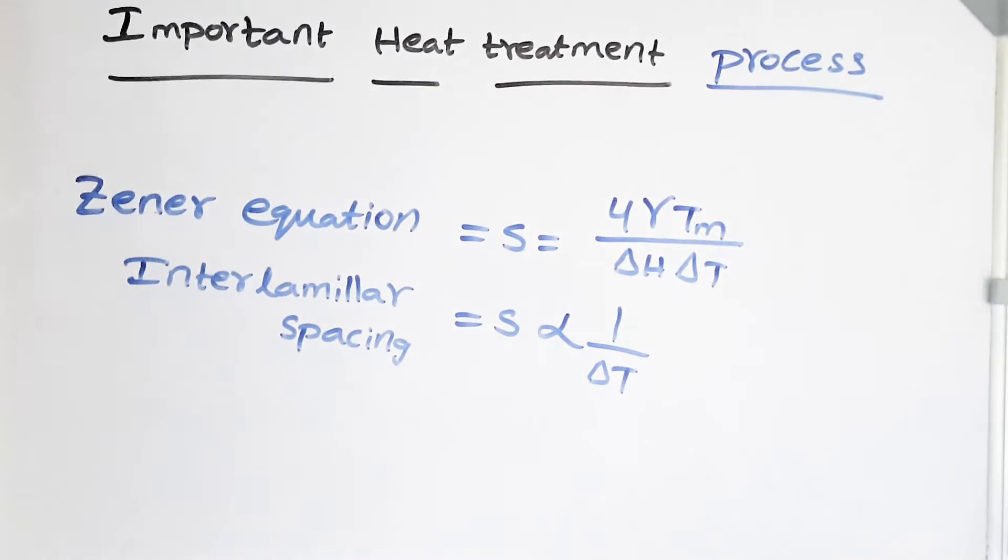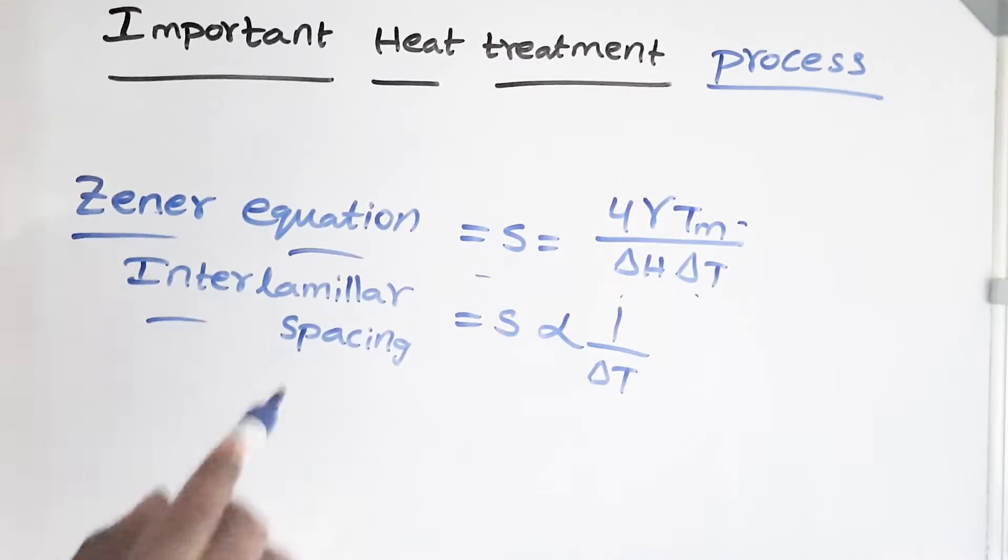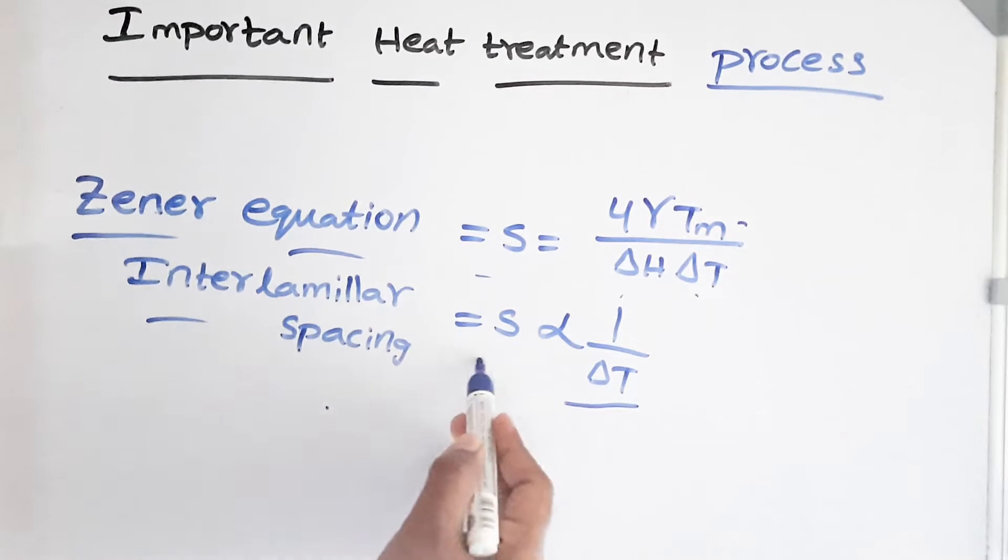Friends, before looking at the process, just look at the general equation which gives us the interlamellar spacing between the ferrite and pearlitic in the pearlitic matrix. So this gives us interlamellar spacing equals 4 gamma Tm, which is melting point, divided by delta H and delta T. So the interlamellar spacing is inversely proportional to delta T. If we want finer interlamellar spacing, we need to increase delta T. But up to what extent is there a limit to this delta T? This we're going to discuss while discussing the process. So let's start the process.